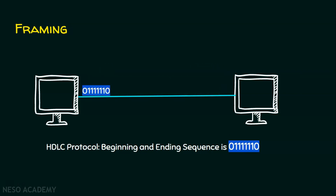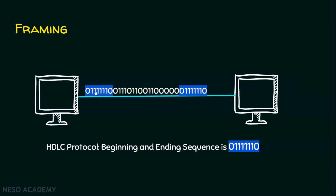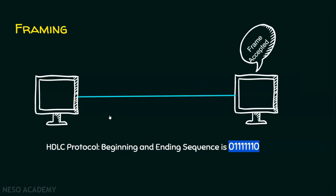Let's see an example. Suppose this is the sender, and this sender is going to send some data to the receiver. The common protocol they agree upon for framing is HDLC. So the beginning sequence will be 01111110 and the ending sequence will also be 01111110. There will be a beginning sequence, followed by other fields, and then an ending sequence. This data is sent and received by the receiver, and the receiver accepts this frame because there is no problem with the group of bits transmitted.